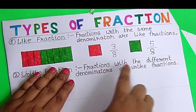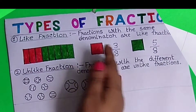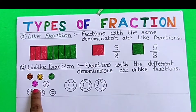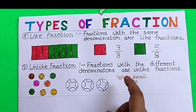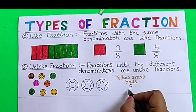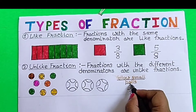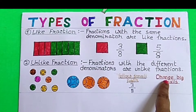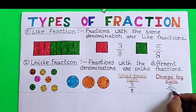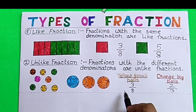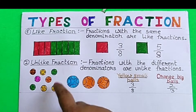Unlike Fractions: Fractions with different denominators are unlike fractions. There are 8 small balls, out of which 3 balls are yellow. So we can represent it as 3 over 8. Now, out of 3 big balls, there are 2 orange big balls. So we can write it as 2 over 3 using fractions. As you can see, both the fractions have different denominators. These are unlike fractions.